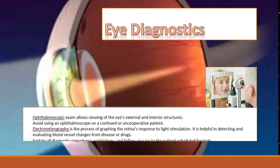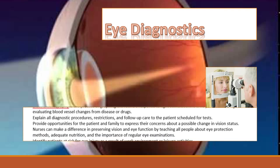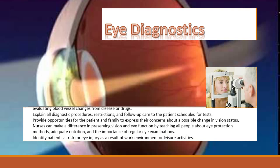An ophthalmoscopic exam allows a view of the eye's external and internal structures. When using an ophthalmoscope, do not use it on somebody who is confused or uncooperative. Electroretinography is the process of graphing the retina's response to light — it is helpful in detecting issues with blood vessel changes, disease, or drug effects. Anytime you're taking care of a patient, explain all diagnostic procedures, the restrictions, and follow-up care. Provide opportunities for the patient and family to express their concerns about any possible changes in vision status.